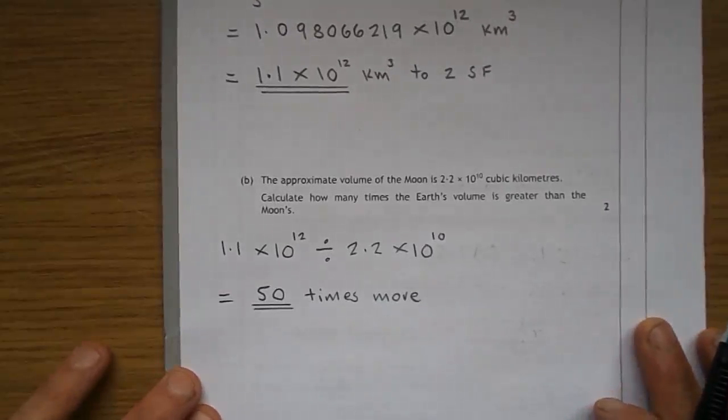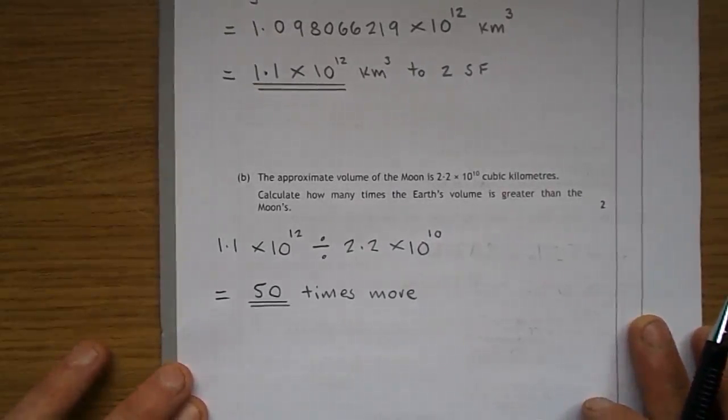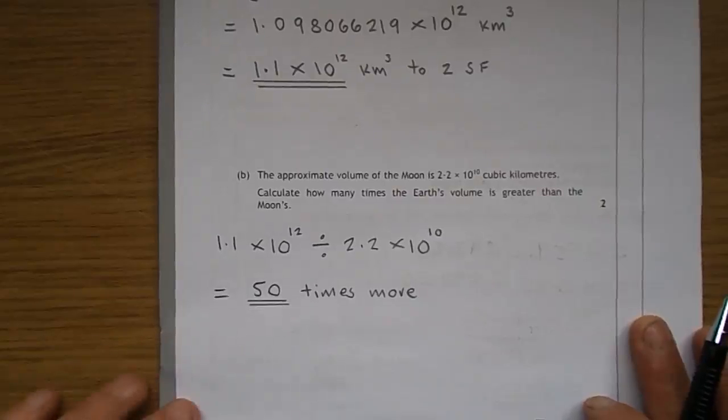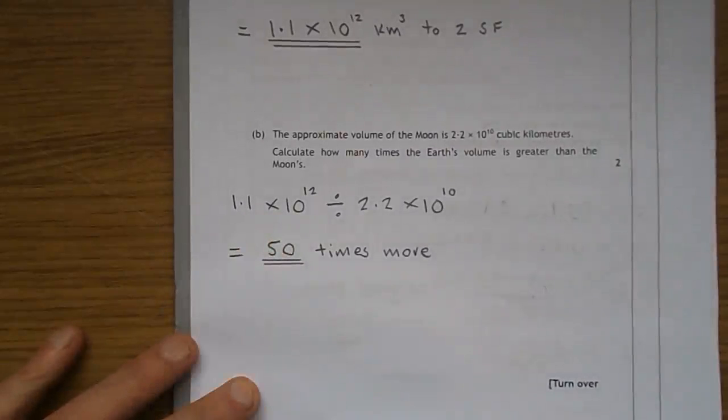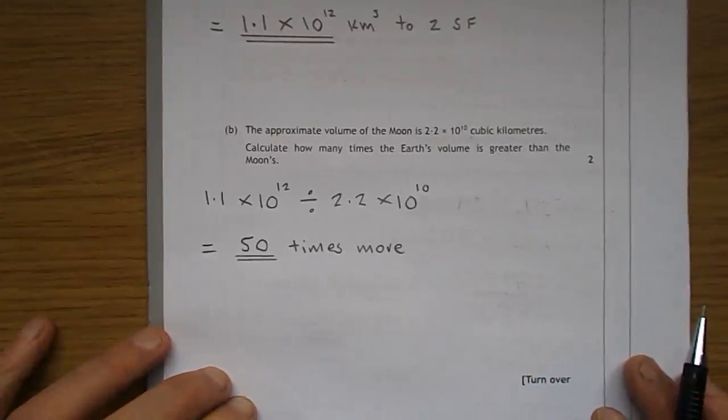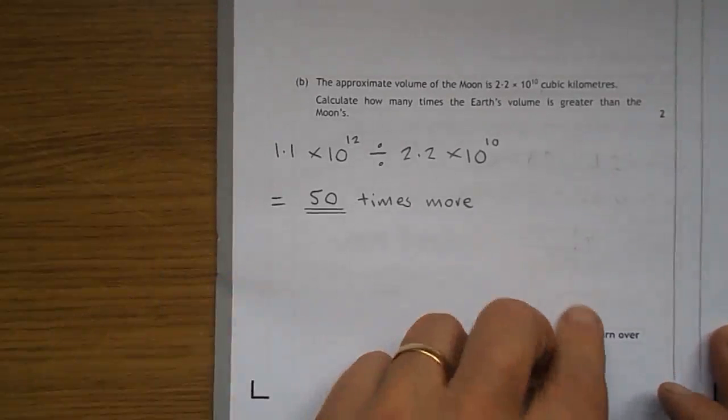Question B. They give you the volume of the Moon. 2.2 times 10 to the power of 10 cubic kilometres. Calculate how many times the Earth's volume is greater than the Moon's. This is, of course, a division. There's the calculation we just did, 1.1 times 10 to the power of 12. Divide it by what they give you as the volume of the Moon, 2.2 times 10 to the power of 10. And you get 50. So, that's number 6.